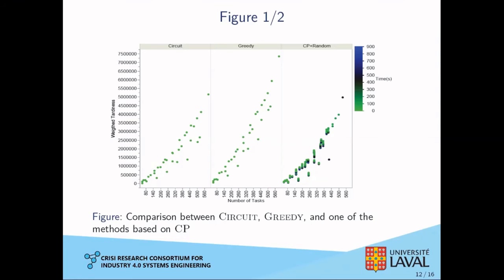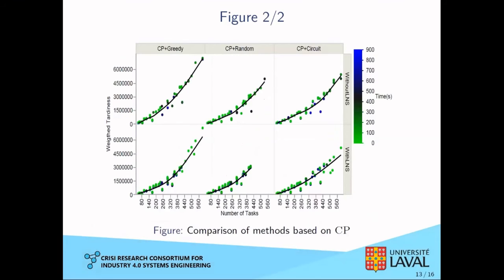Circuit is quick to compute, but merging both approaches gives better results. In the second figure, every method uses constraint programming since it was the best from the previous figure. We use different search heuristics — greedy and circuit — to initialize the CP, and the y-axis shows results with or without LNS. The clear winner is CP plus circuit, which finds better solutions than CP plus greedy. CP plus random doesn't even find solutions for all instances.